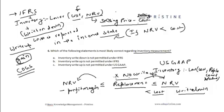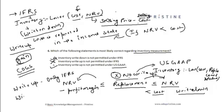Reviewing the statements: inventory write-down is permitted under IFRS — correct. Inventory write-down is not permitted under IFRS — incorrect. Inventory write-up is not permitted under IFRS — incorrect. Inventory write-up is not permitted under US GAAP — correct. So write-up is only allowed under IFRS, while write-down is permitted under both IFRS and US GAAP.